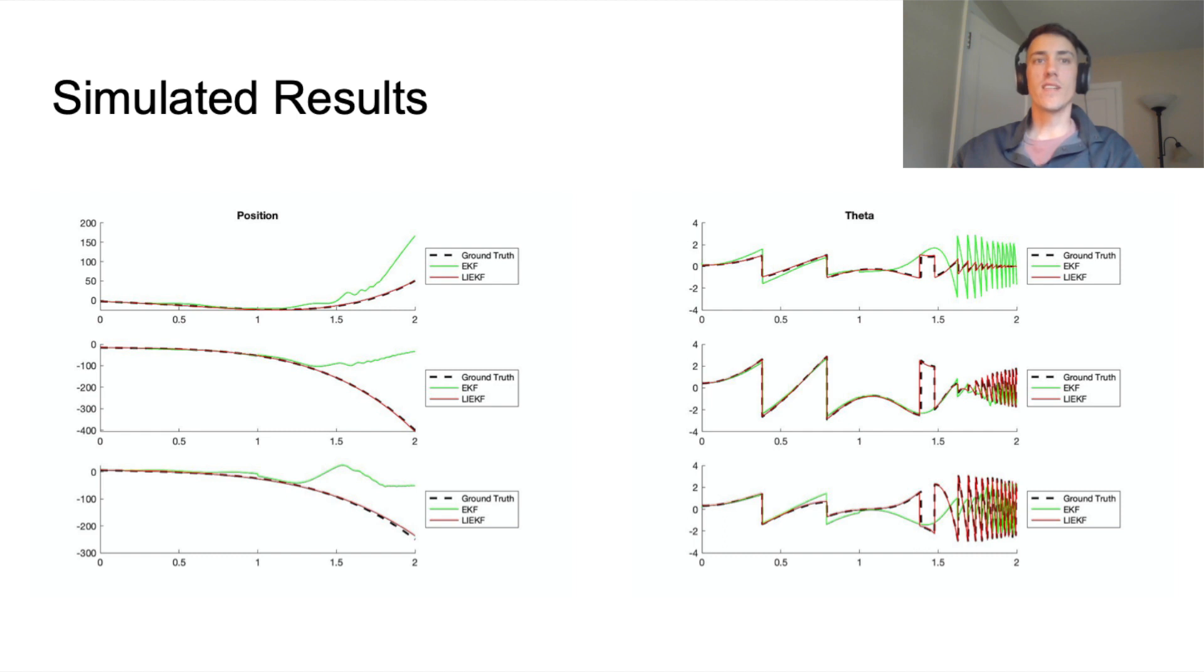We also used the generated dataset to compare the performance of a typical EKF to our invariant EKF. Here, we show that the EKF estimation quickly diverges during large rotations while the invariant EKF maintains an accurate estimate.